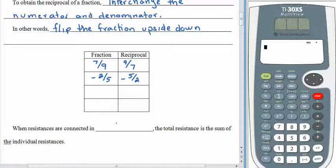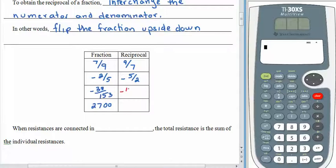We'll talk about why this works once we start dividing fractions in a couple of lessons. What if we were looking at negative 38 in the numerator and 153 in the denominator? You should be able to write the reciprocal. You should also be able to write the reciprocal of 2700. Give it a try. The reciprocal of negative 38 over 153 is negative 153 over 38. And 2700 — its reciprocal is 1 over 2700, because of course we think of 2700 as being a whole number with a denominator of 1.